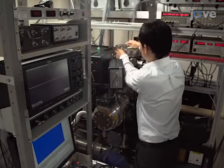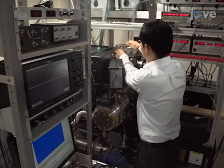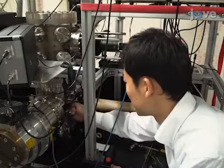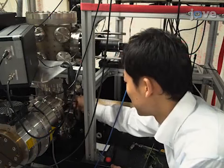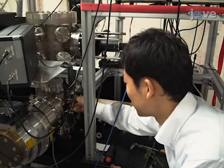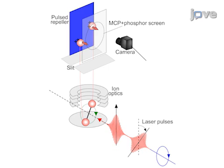The equipment needed for the experiment has two main components. The first is a two-dimensional slice imaging apparatus constructed in a vacuum chamber. This schematic provides an idea of what is inside the chamber.